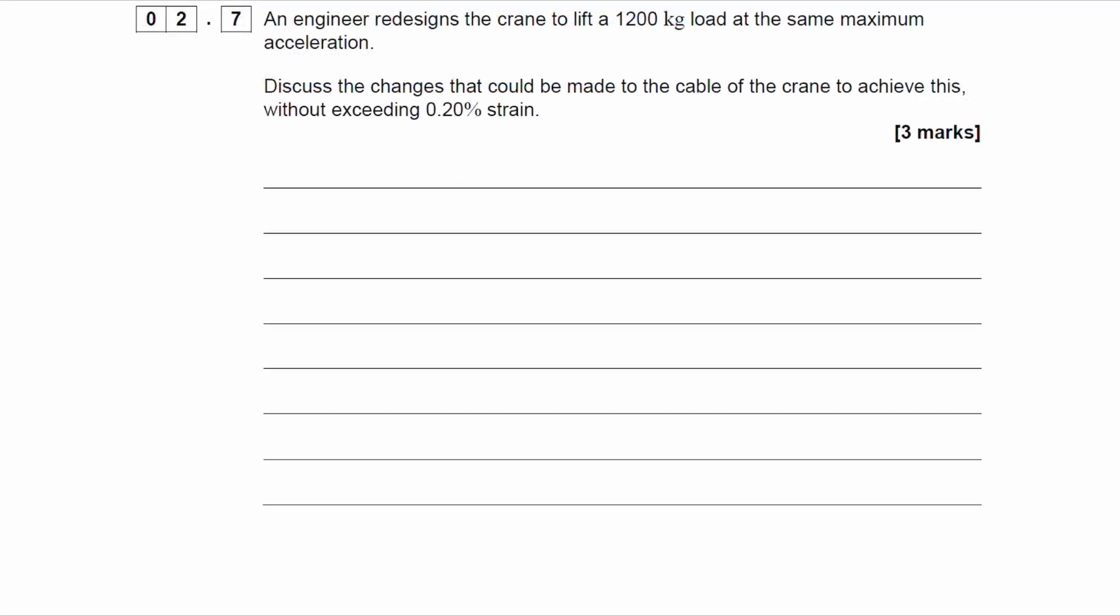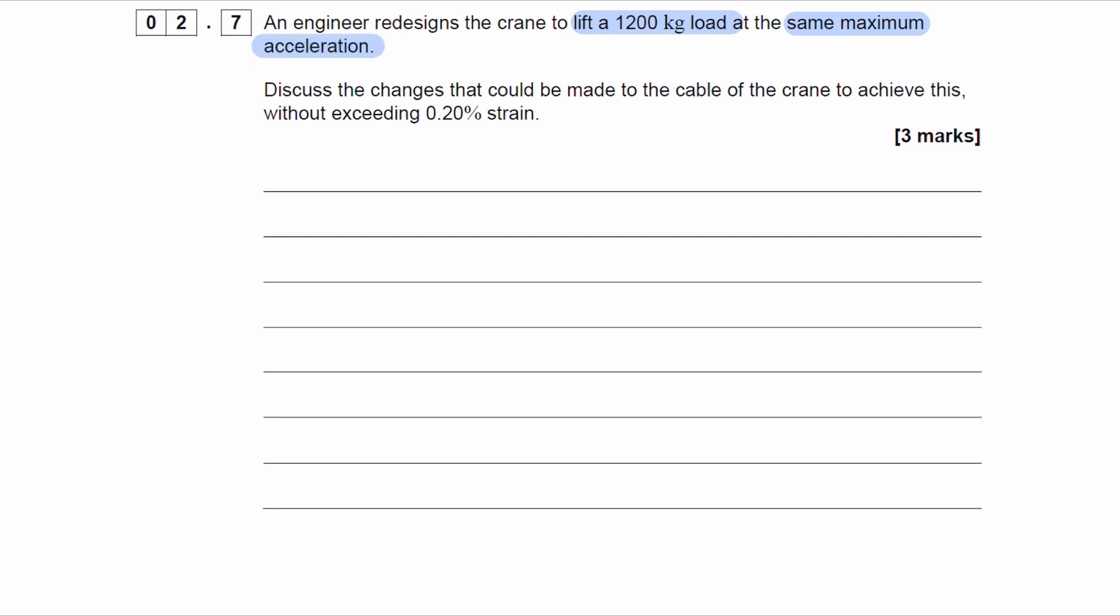An engineer redesigns the crane to lift a 1200kg load at the same maximum acceleration. Discuss the changes that could be made to the cable of the crane to achieve this without exceeding the 0.2% strain. So let's first of all think about how doubling the mass affects the force. So tension upwards, let's just say the weight is mg, acceleration is again upwards. So that means that T minus mg is equal to MA as before. T is then equal to mg plus MA. T is then equal to M multiplied by G plus A.